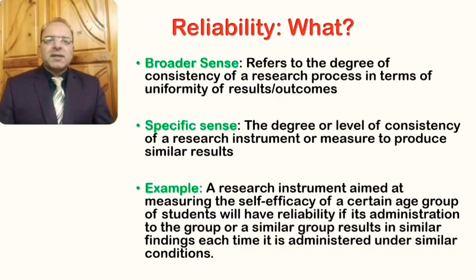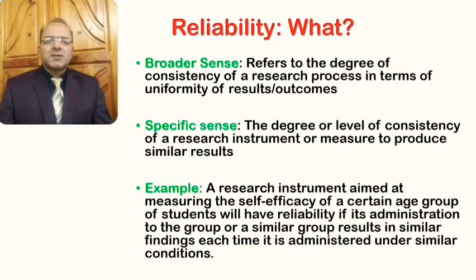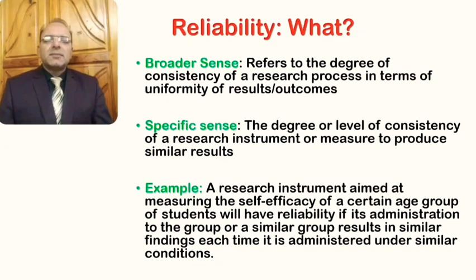In its very specific sense, reliability is the degree or level of consistency of a research instrument or measure to produce similar results. For example, a research instrument aimed at measuring self-efficacy — one of the constructs in social sciences — will have reliability if its administration to a group or a similar group results in similar findings each time it is administered under similar conditions.